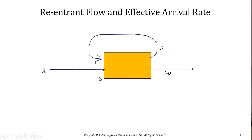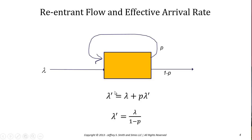So the first question is how do we account for that. This is called reentrant flow, where we have a nominal arrival rate lambda and a probability P that entities flow back through the system. The effective arrival rate, lambda prime, that the station sees is equal to the external rate lambda plus P times lambda prime. Solving for lambda prime, the effective arrival rate is simply lambda over 1 minus P.